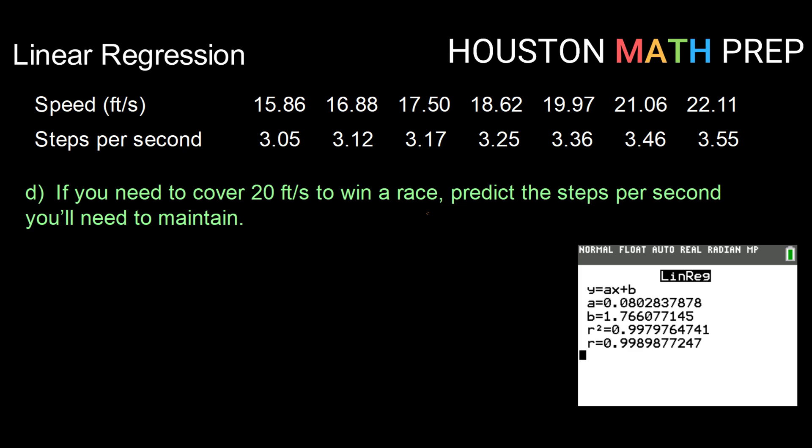Okay, the final thing that we want to do for this particular example is we want to use our linear equation, our line of best fit, to predict a variable. So if you need to cover 20 feet per second to win a race, predict the steps per second you would need to maintain. So this is saying if you had an x value of 20, what steps per second would you need? Now we have data values close to 20. We have 19.97 and then we have one just above, so we're kind of in here. So we want to use our linear equation to predict.